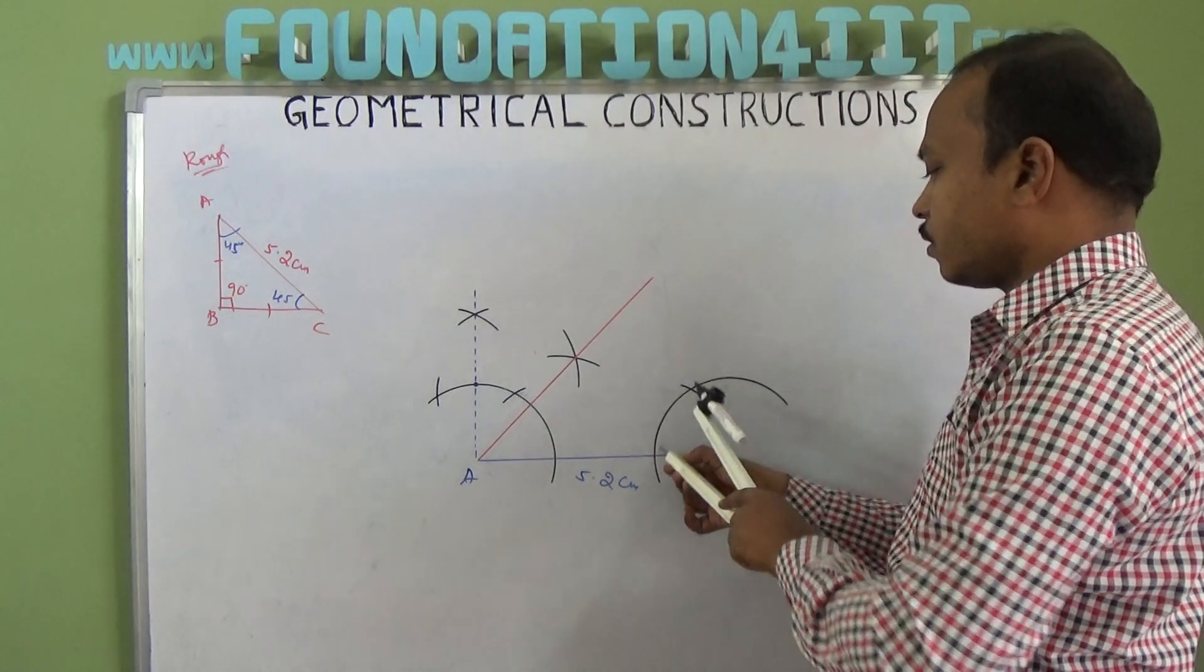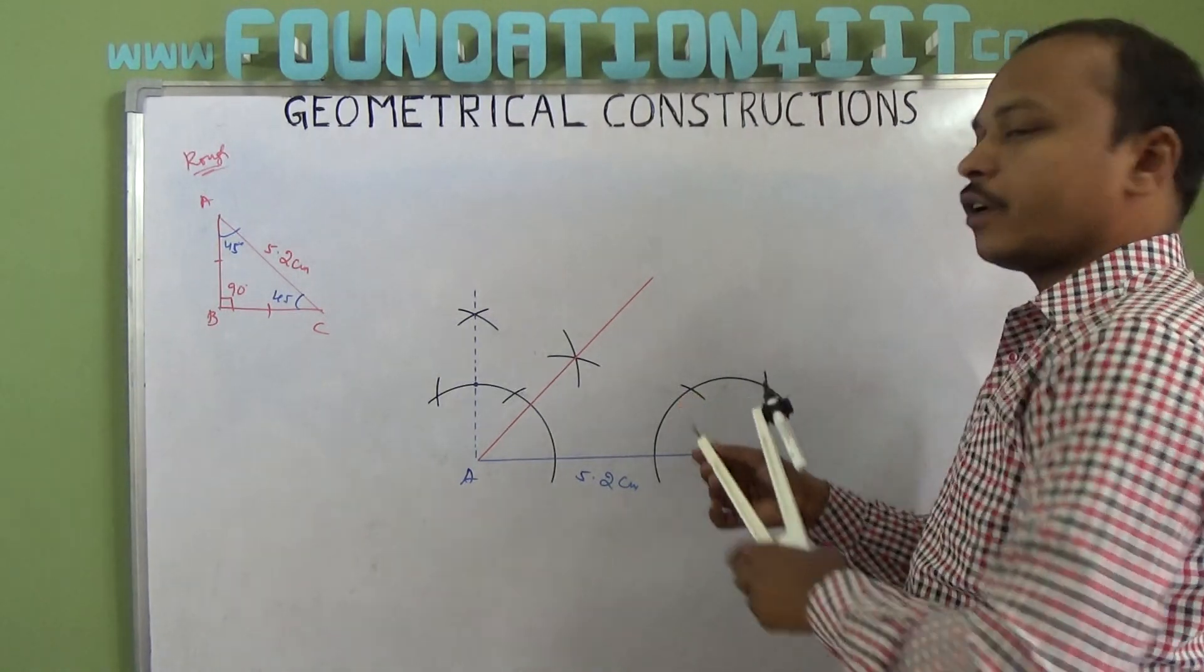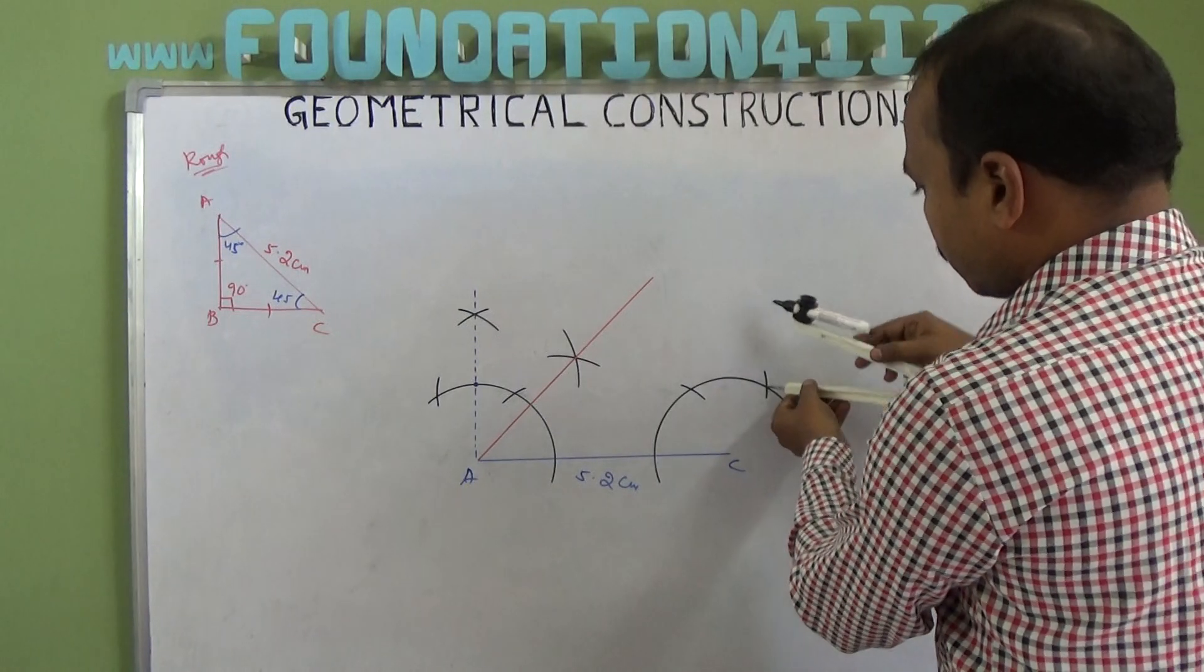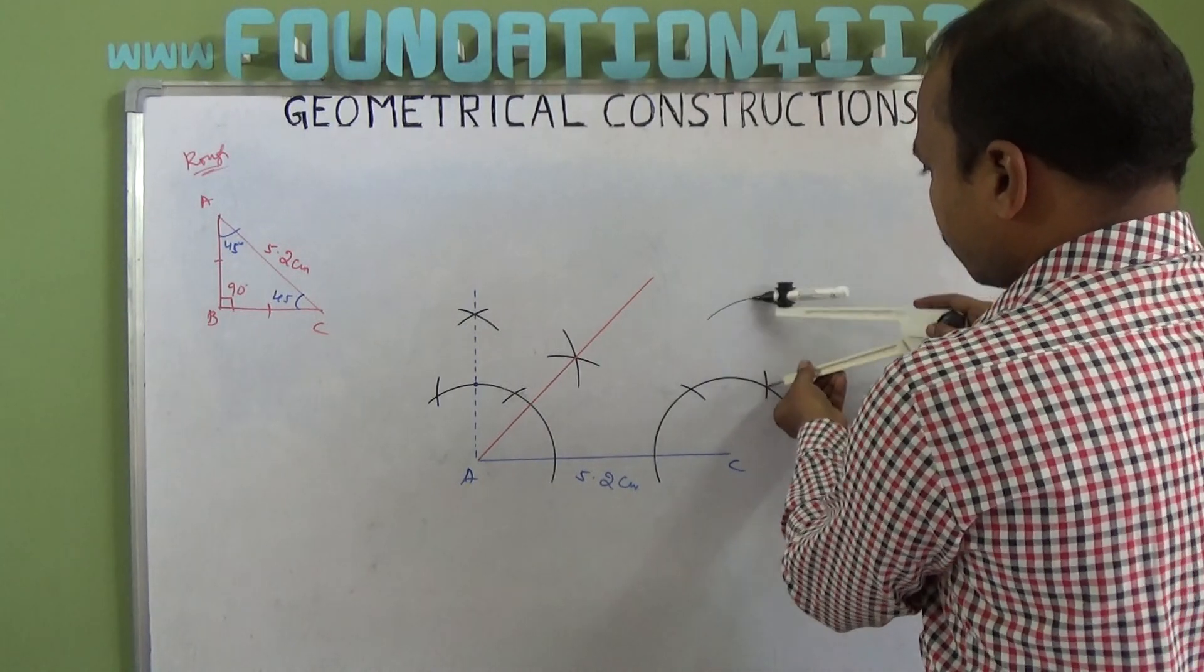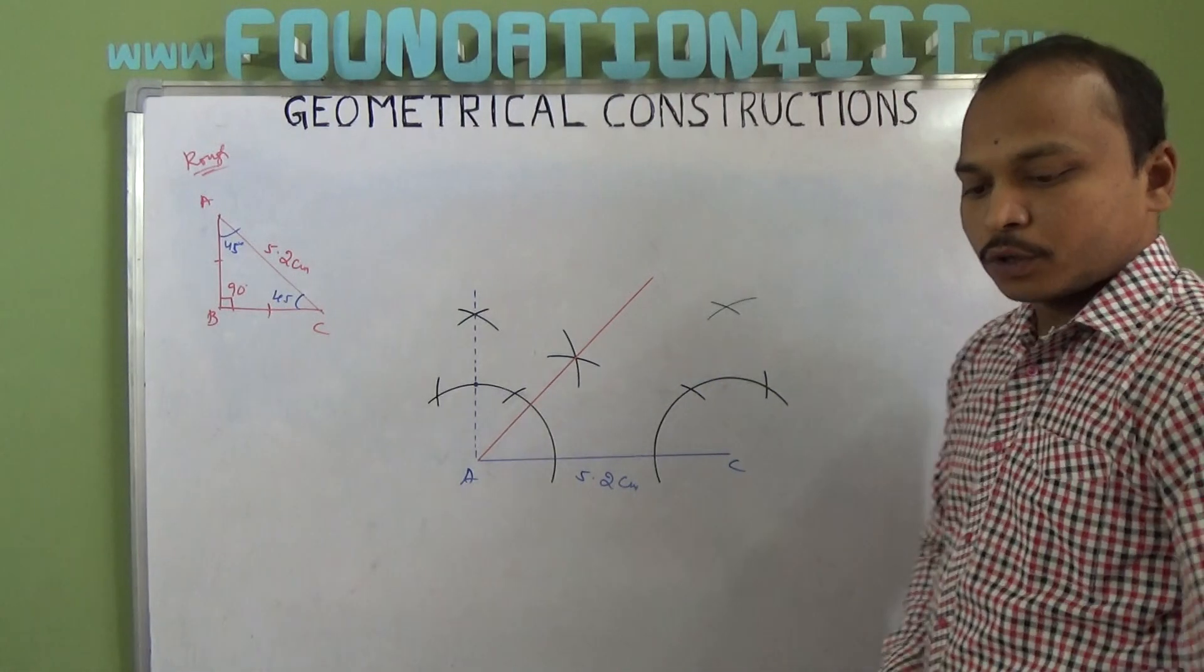Then 60, 120 and extend. Join both. So this is 90.